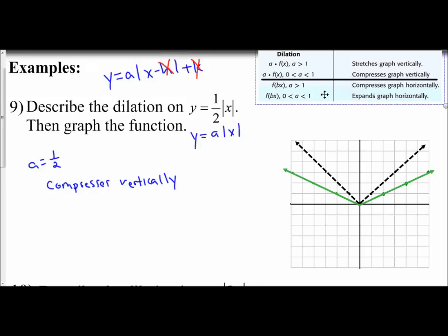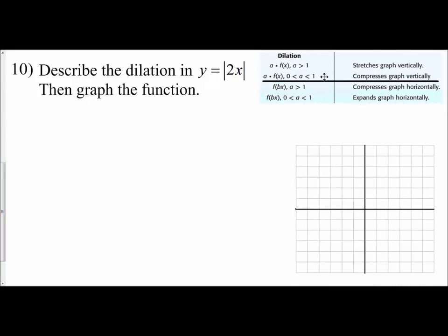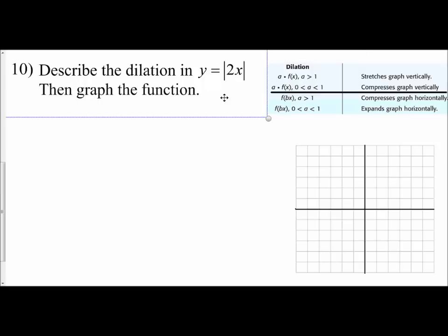we'll look at an absolute value function where we have a b value. The coefficient 2 is paired up with the x. We have y equals the absolute value of bx, where b equals 2. We don't have h or k. Since that size is large, this graph is going to compress horizontally.